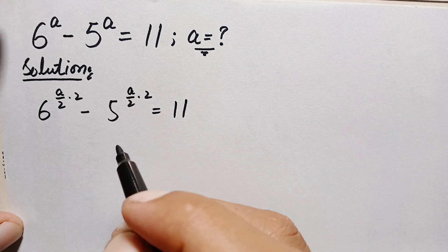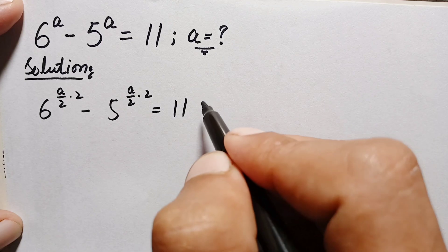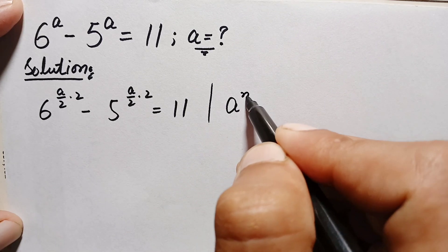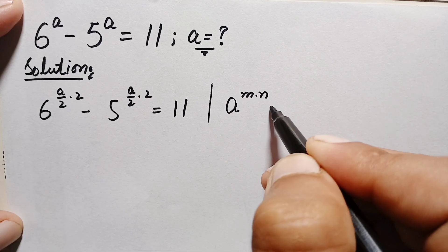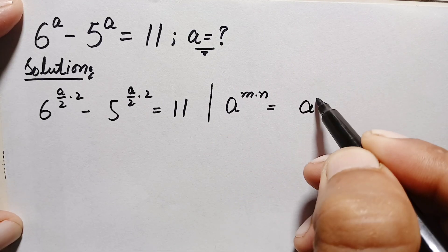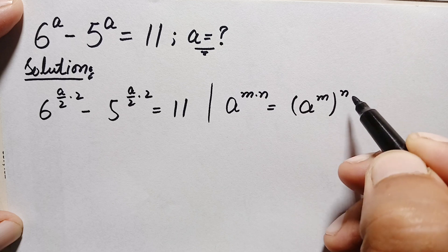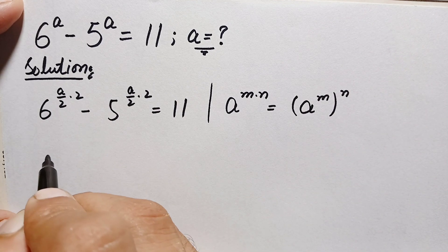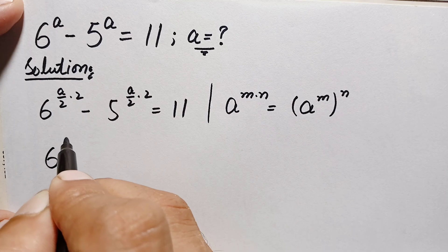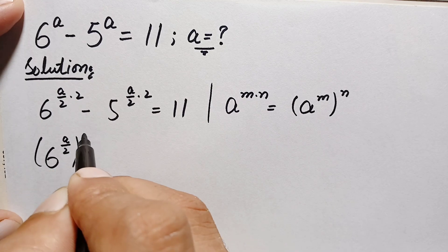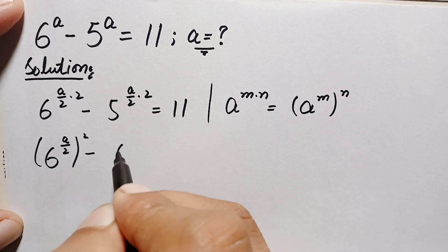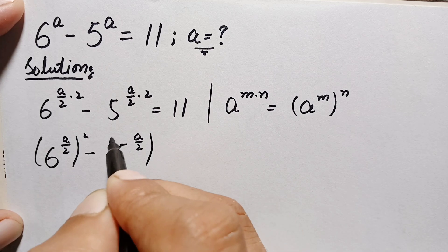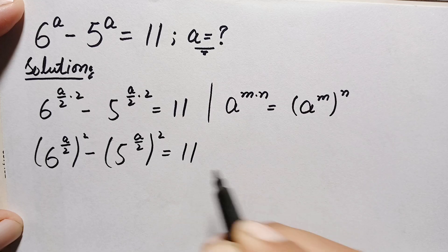Next, in both terms we will use an exponential identity. The identity states: a raised to power (m × n) can also be written as (a raised to power m) whole raised to power n. Using this identity, the left hand side becomes (6 raised to power a/2) whole squared minus (5 raised to power a/2) whole squared, equal to 11.